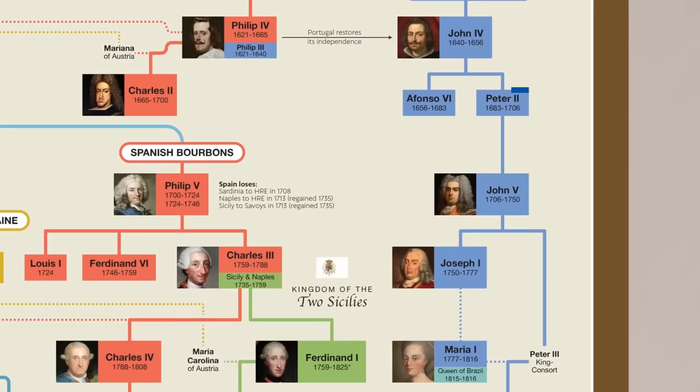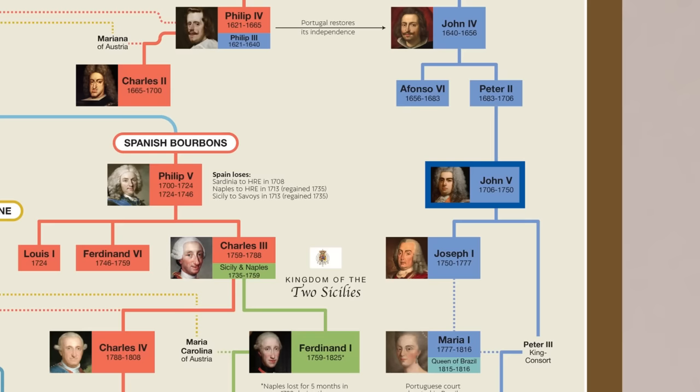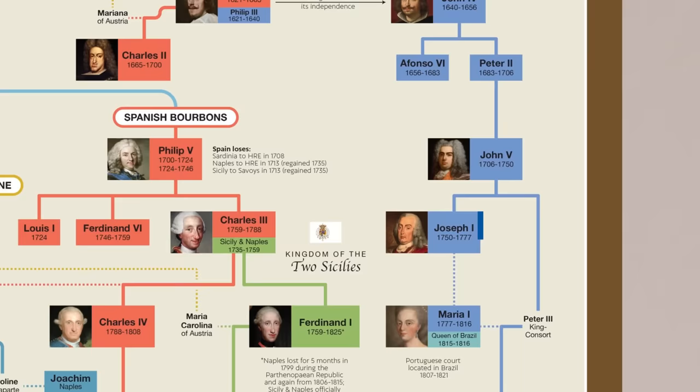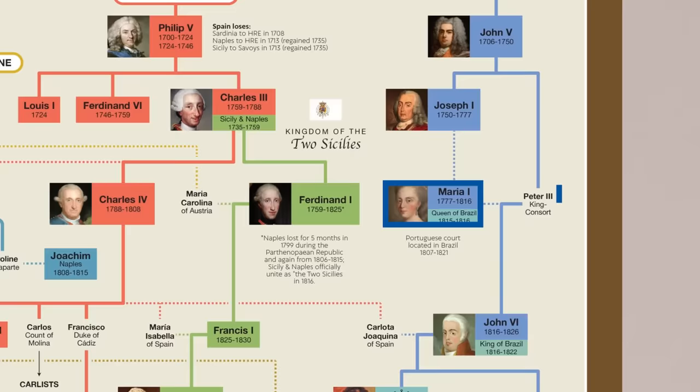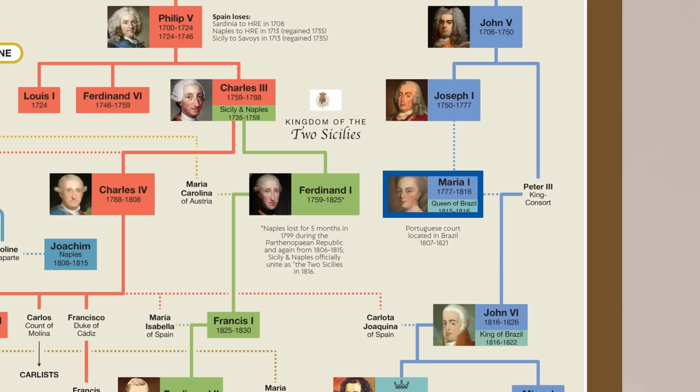John V is known as the Portuguese Sun King, indulging in great levels of wealth, prestige, and absolute monarchy in the style of Louis XIV of France. He was followed by his son José I, and then in 1777 Portugal had its first reigning queen, Maria I. She married Pedro III, who was also her uncle. Technically they were co-monarchs, but he was never really involved in matters of government.